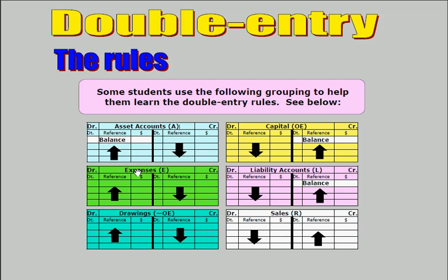Expenses such as wages, cost of sales, rent, etc. The double entry rule says that an increase in expense accounts is shown by a debit entry.